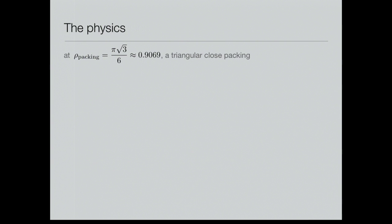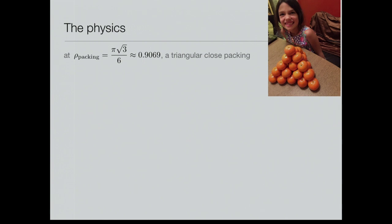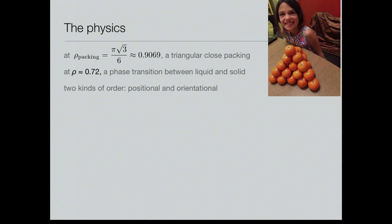Before we try to prove things, let's find out what the truth is. There's an amazing amount of phenomenology in this system. When the density reaches the close packing density of disks, the only available state is a triangular close packing — here's the three-dimensional version, courtesy of Tom and Varsha's daughter Shreya. At a density around 0.7, there is a phase transition from a liquid or gaseous state where everything has a lot of room to move, to a state called a solid. Although what we mean by solid in the continuous setting in two dimensions turns out to be quite subtle.